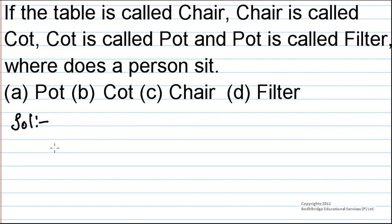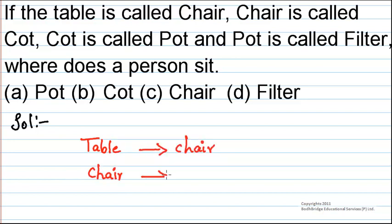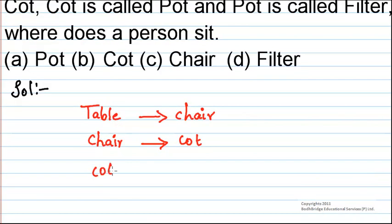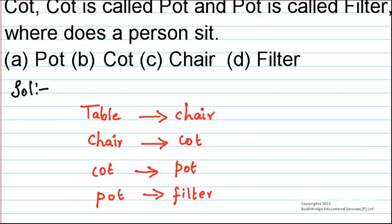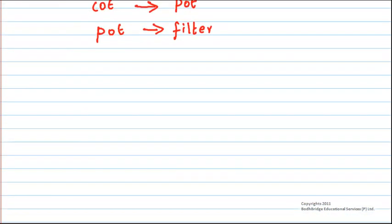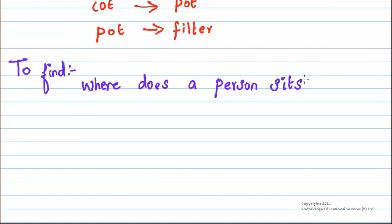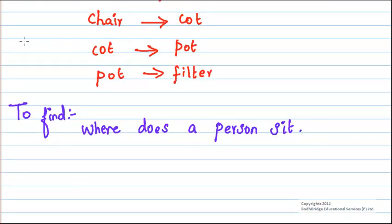Solution: It is given that table is called chair. So, table = chair, chair is called cot, cot is called pot, and pot is called filter. Now, where does a person sit? A person will sit on a chair, but here the chair is called cot.